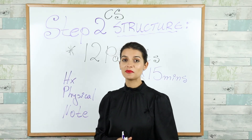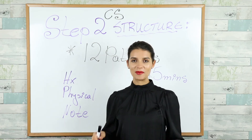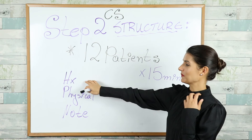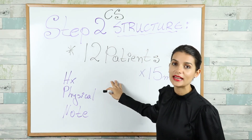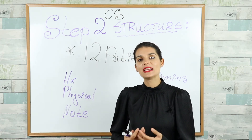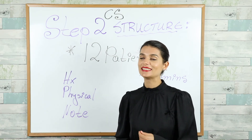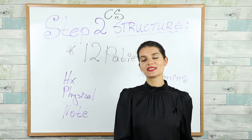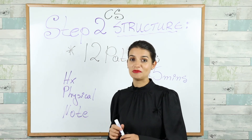The step 2 CS exam is the clinical skills part — a practical exam with no MCQs. You meet 12 patients, and for each patient you have 15 minutes to take the history, perform a physical examination, and write your note. Interestingly, these 12 patients are actually actors trained to exhibit the same complaints and symptoms a real patient would have with a given disease. It's a fast-paced, fun exam — a refreshing change, especially for those who enjoy the practical side of medicine.